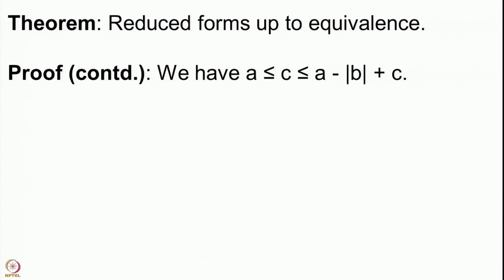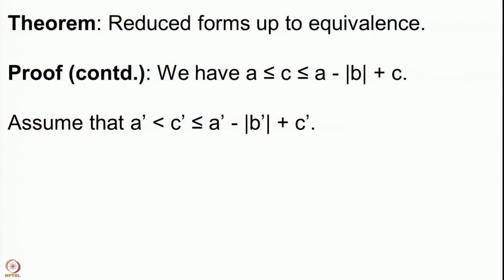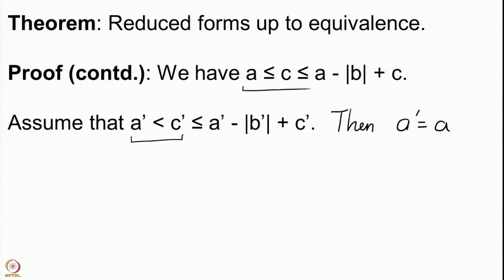We have a less than or equal to c less than or equal to a minus mod b plus c, because our form is reduced. We also have similar inequalities for the coefficients of f prime: a prime less than or equal to c prime less than or equal to a prime minus mod b prime plus c prime. We start with the first inequality being strict. Among the three smallest values taken by f prime, a prime is the smallest, and therefore a prime must equal a — since the sets of integers properly represented by f and f prime are the same.